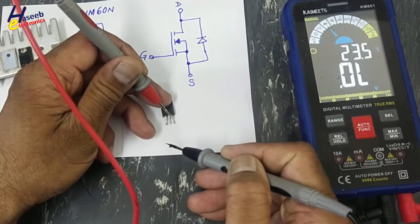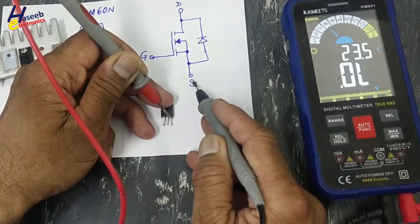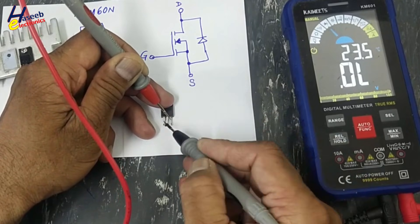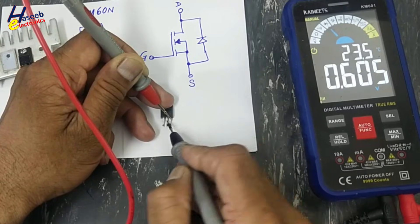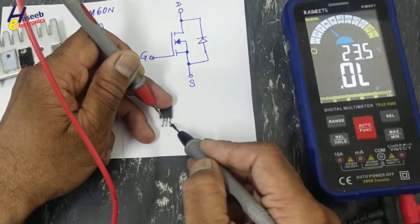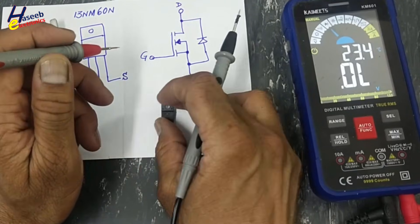Let's discharge the channel. Red lead at source, black lead touch to gate. Check between drain and source - one diode drop voltage. Reverse the leads - open circuit. So this MOSFET is good.